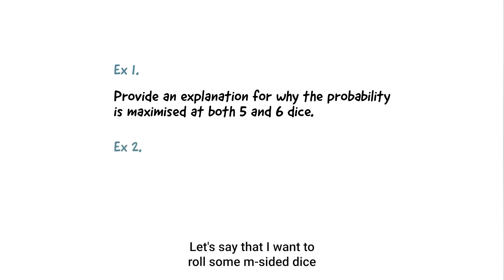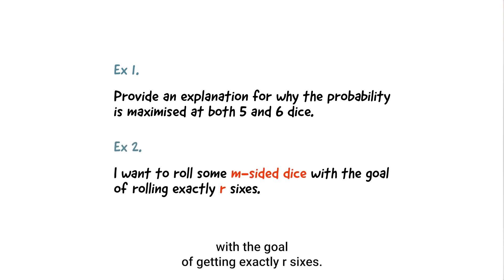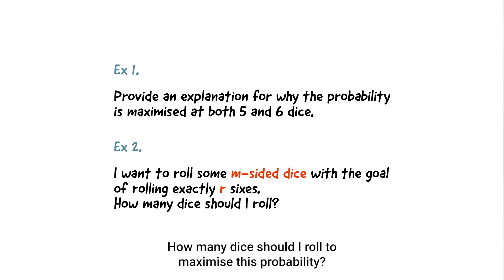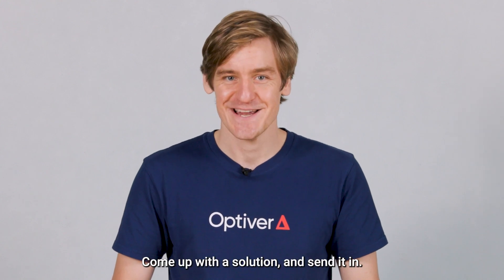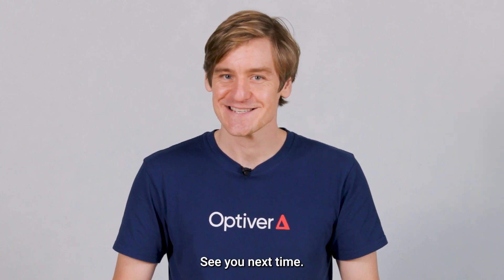Let's say that I want to roll some m sided dice with the goal of getting exactly r sixes. How many dice should I roll to maximize this probability? Come up with a solution and send it in. I'll leave you to it. See you next time.